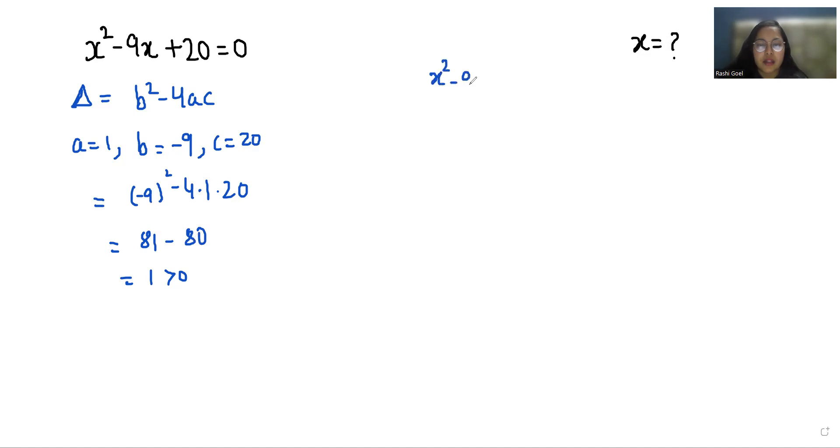So x square minus 9x plus 20 equals 0. First we are going to solve this equation by middle term split method, and we can write this negative 9x as negative 5x minus 4x, and rest plus 20 equals 0.